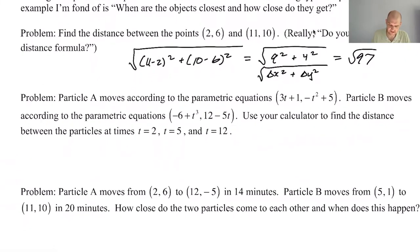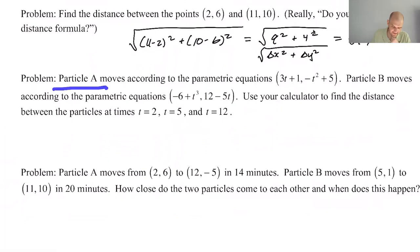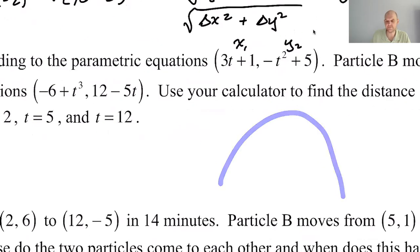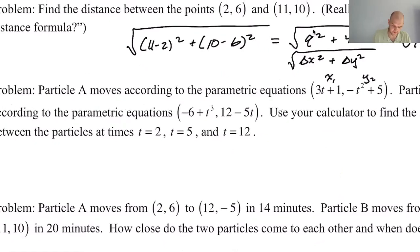What if particle A moves according to parametric equations (3t + 1, -t² + 5)? What does this look like? This is x₁ and this is y₁. You could say t is (x - 1)/3, then plug that in here. This is just a quadratic that opens down.